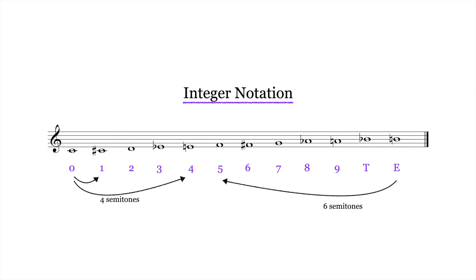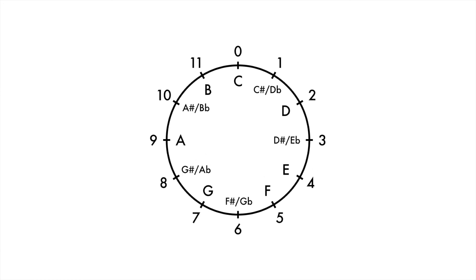Using a pitch clock, which plots pitch classes on a traditional analog clock face, makes these distances easier to visualize. Moving in a clockwise direction represents ascending motion, and moving in a counterclockwise direction represents descending motion.